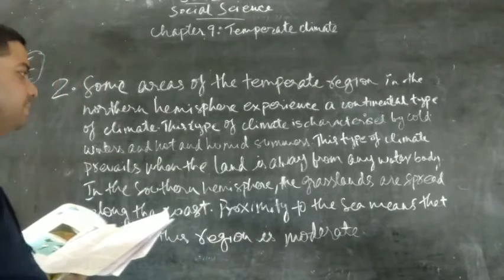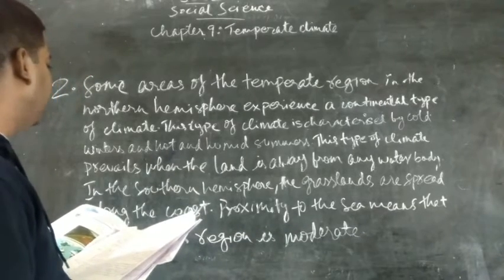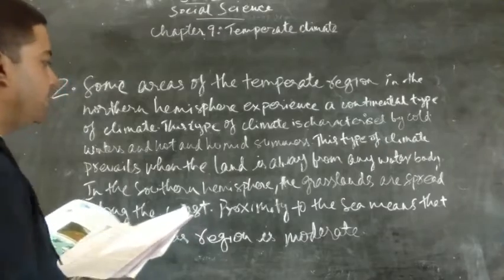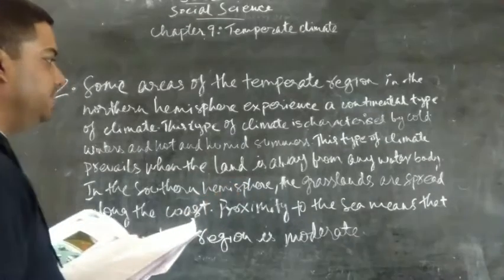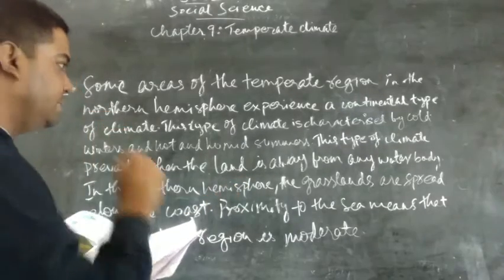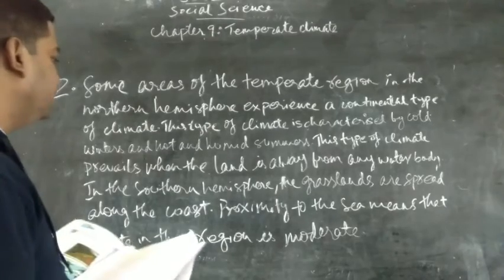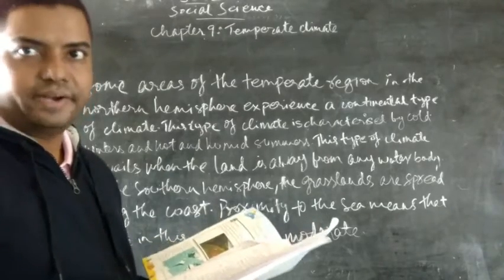In the southern hemisphere, the grasslands are spread along the coast. Proximity to the sea means that the climate in this region is moderate.